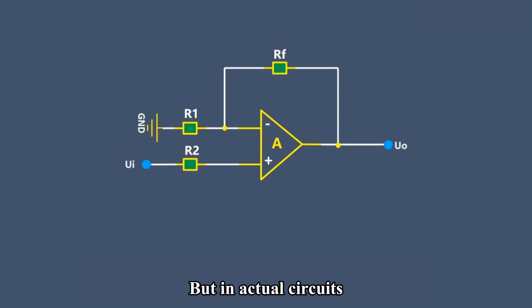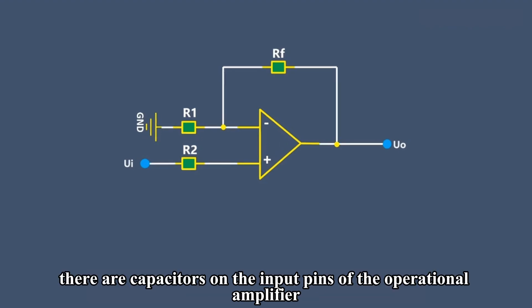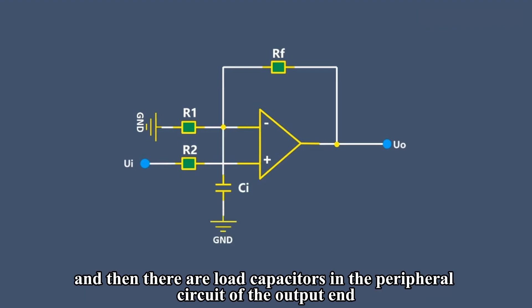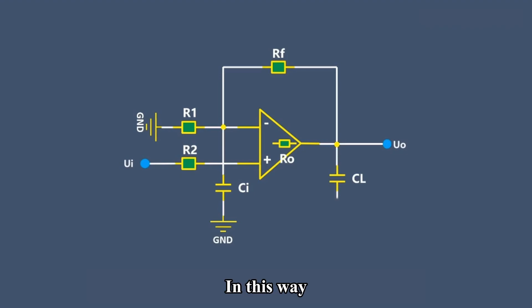But in actual circuits, there are capacitors on the input pins of the operational amplifier, output pins have output resistance, and there are load capacitors in the peripheral circuit of the output end. In this way, the feedback loop is a second-order RC model.